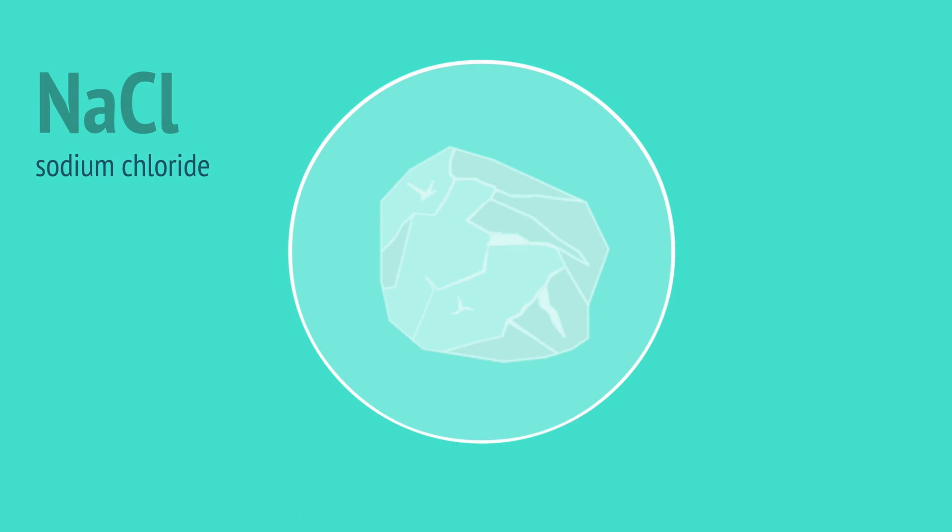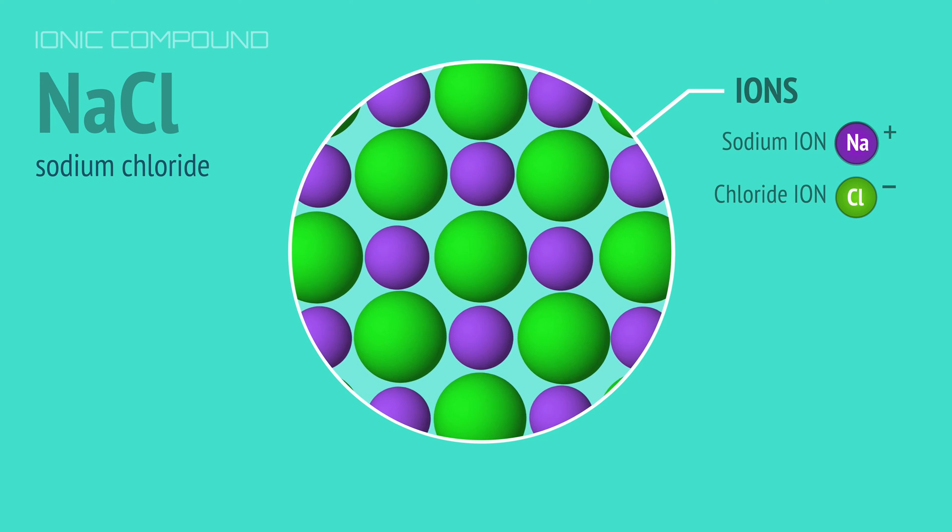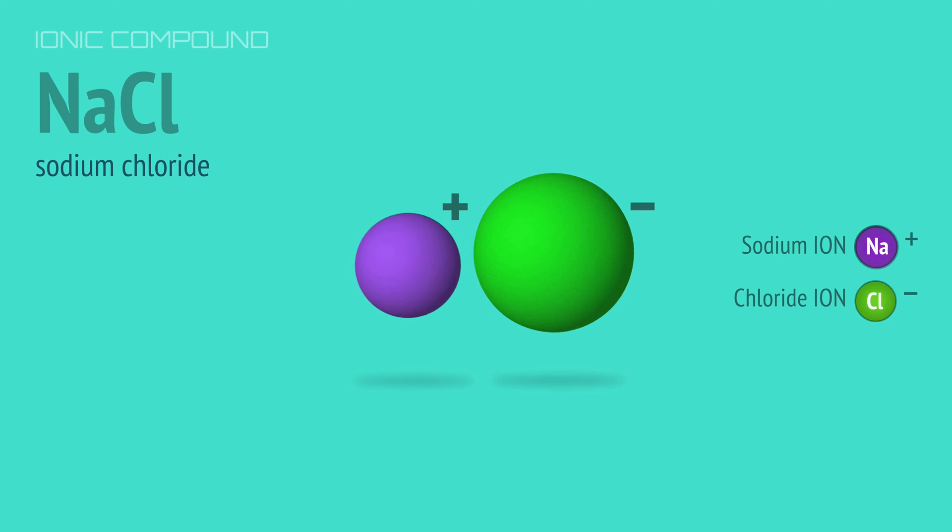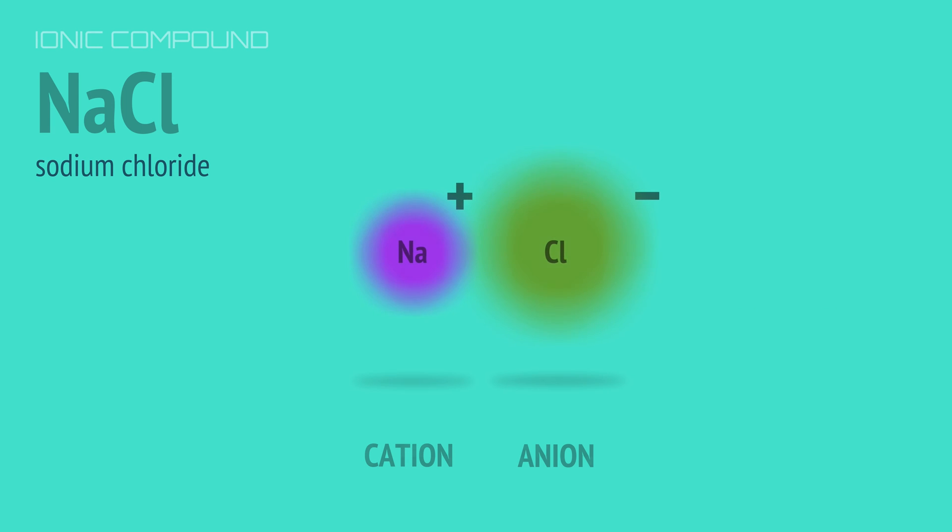Sodium chloride or table salt is an ionic compound. It exists as a lattice of sodium and chloride ions held together by strong ionic bonds. Ionic bonding is the electrostatic attraction between positive ions called cations and negative ions called anions. These charges are the result of an electron transferred from one electron cloud to another.